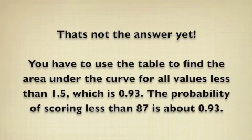Moving on, that's not the complete answer yet. You have to use the table to find the area under the curve for all values less than 1.5, which is 0.93. The probability of scoring less than 87 is about 0.93.